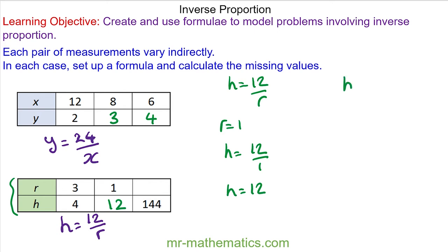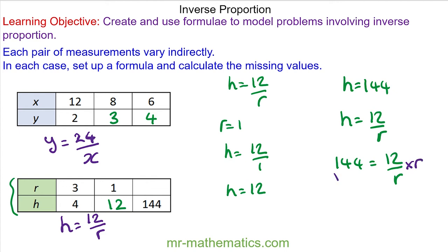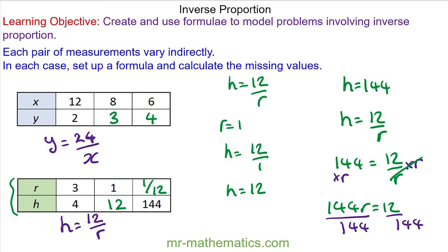In the next part of the question, we're given h is equal to 144. Using the same model, 144 is equal to 12 divided by r. To work out r, we multiply both sides by r, so 144r equals 12. We divide both sides by 144, so r equals 1/12. And again, you can see that as r decreases, the value of h is increasing.